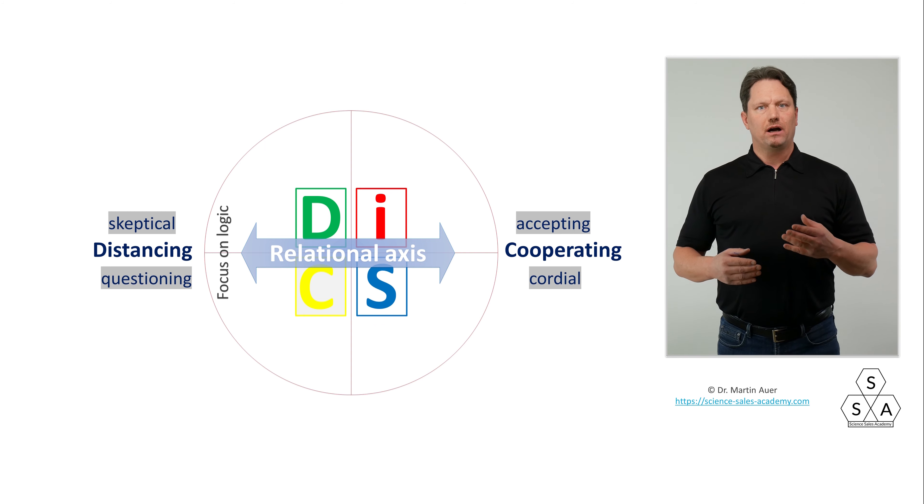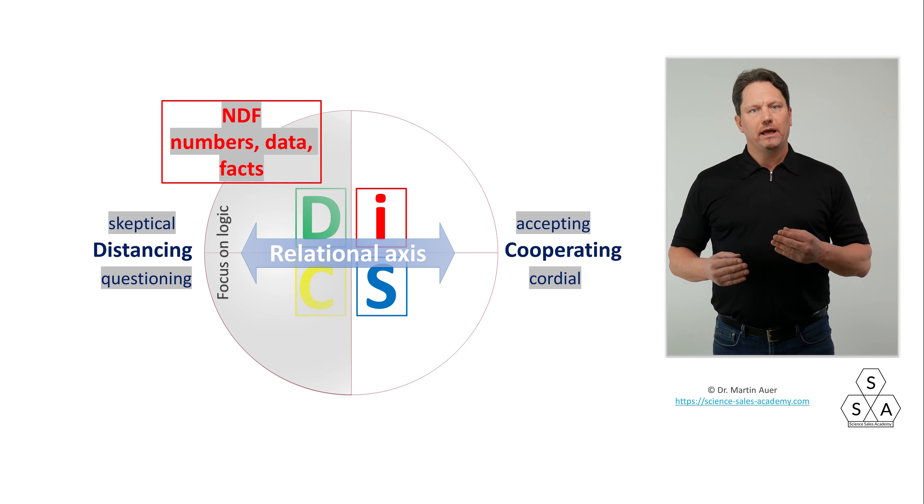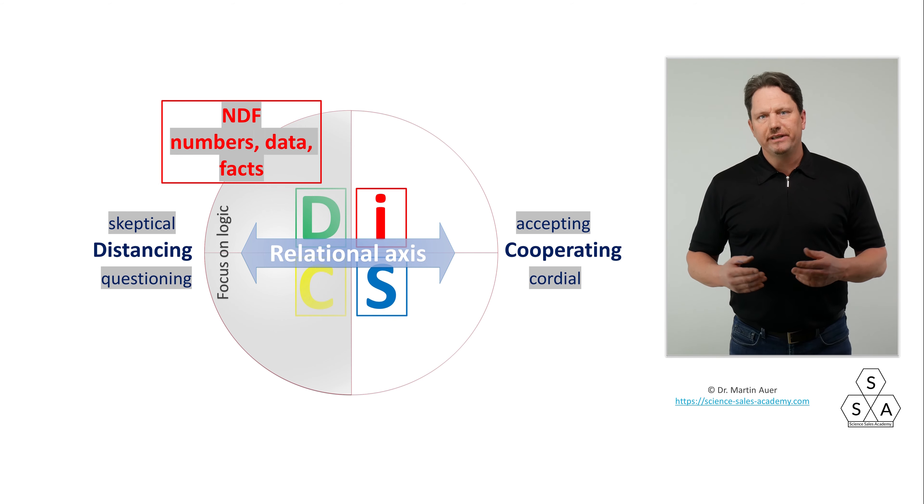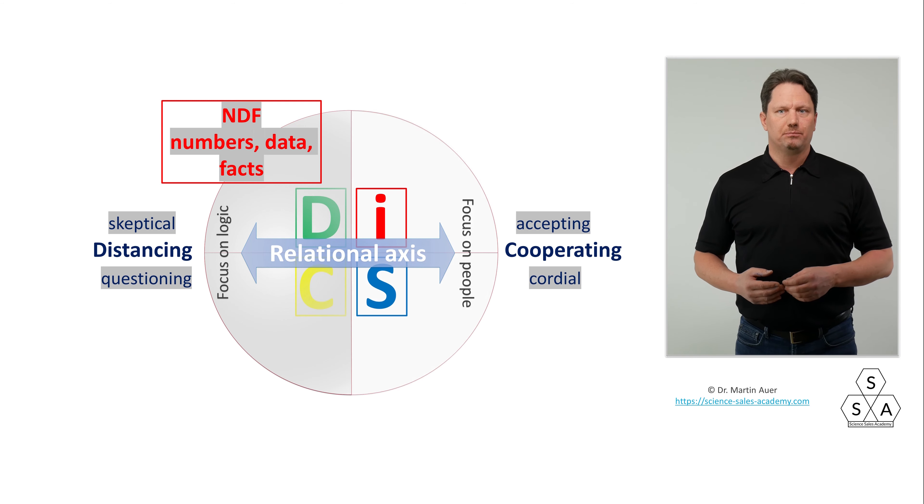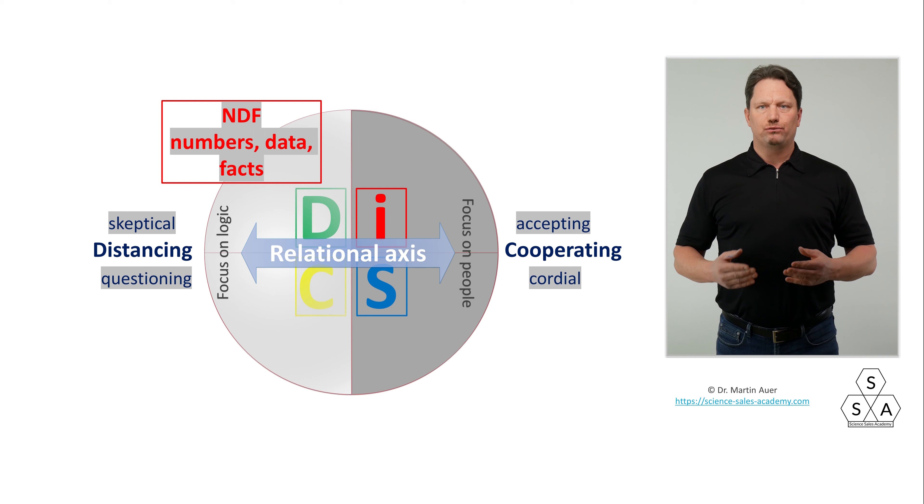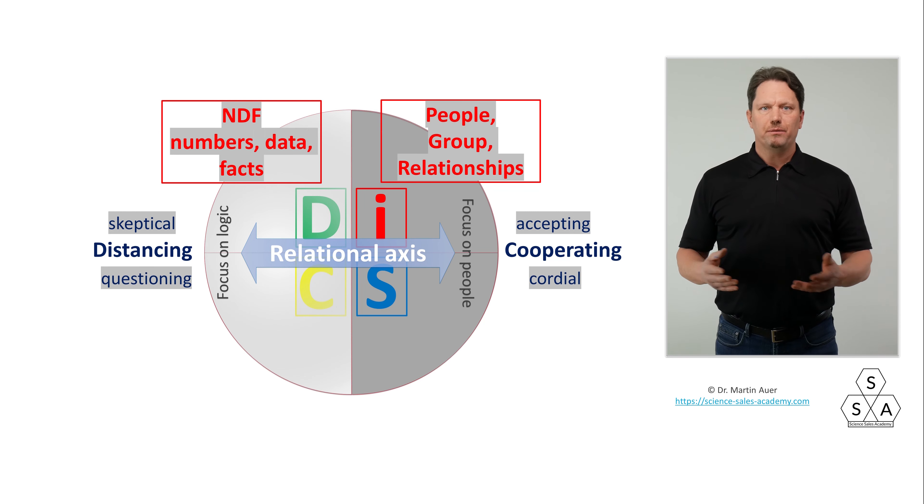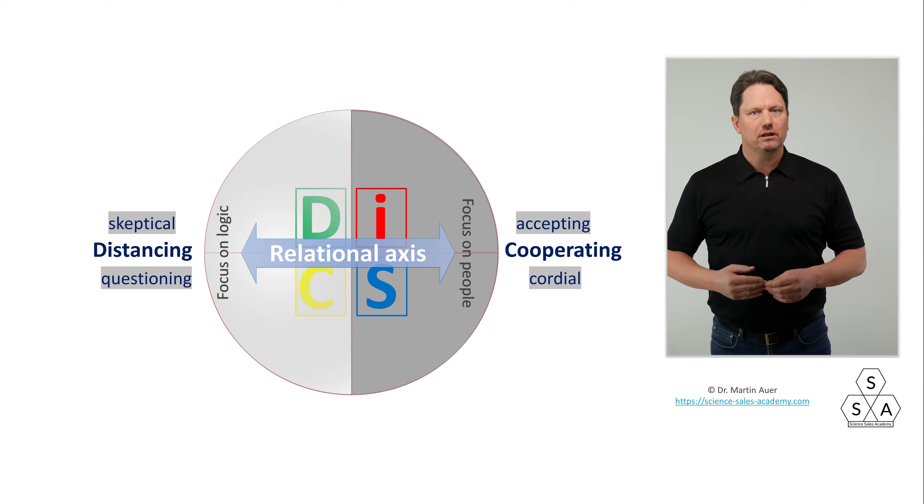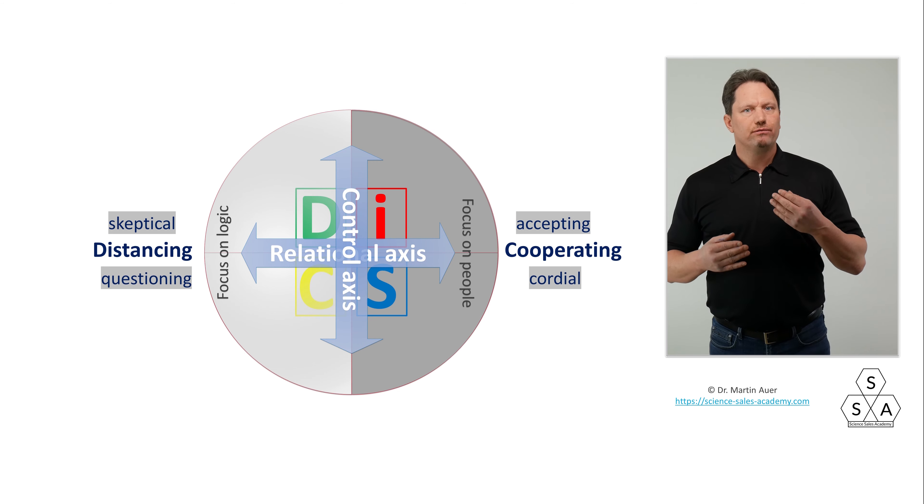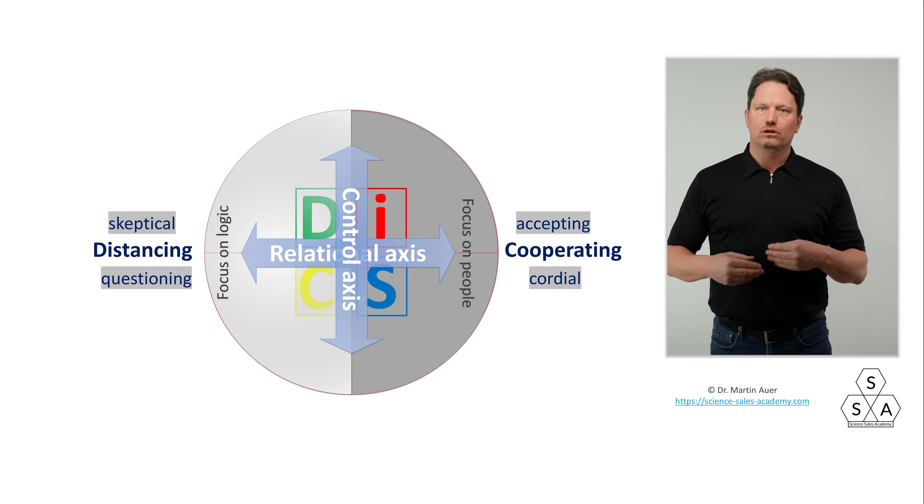Chapter 6 Part 2. Incidentally, this applies to the entire half of the DISC circle. This left half side is about logic, about the matter, about facts, about numbers, about cold results. We say that the whole left side of the DISC circle is about NDF: numbers, data, facts. People and relationships come second or lower in importance and priority. This is exactly the other way round on the right half side of the circular model. This right side is about people first and foremost. The community, the relationships - the people are very important here and thus come first. That was the horizontal axis, the relationship axis.